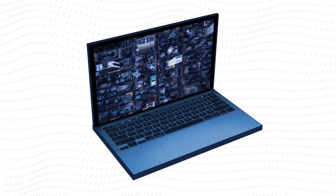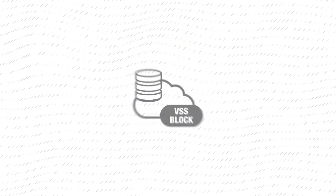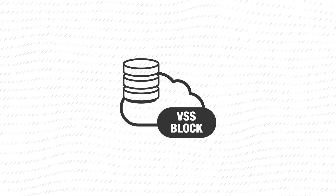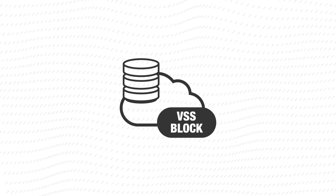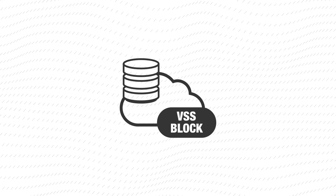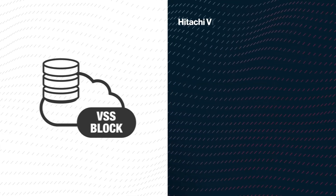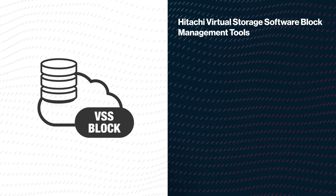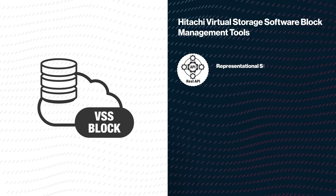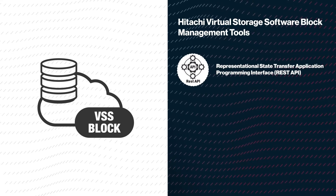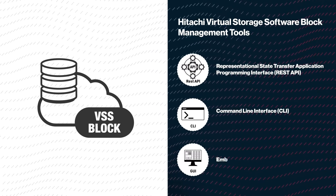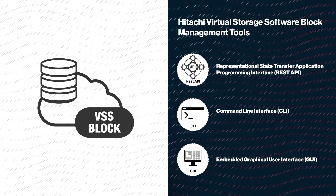This video provides an overview of Hitachi Virtual Storage Software Block (VSS Block) management tools. There are three ways to manage VSS Block, which include a REST API, a CLI, and an embedded GUI.